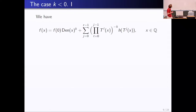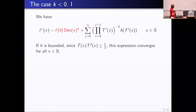If k is less than zero, then −k is positive, so the iteration converges exponentially fast. In fact, you can even define f at real numbers: it's a convergent series — t(x) is never zero so you just keep going, and you think of the denominator as infinity giving zero. This formula converges for all x.